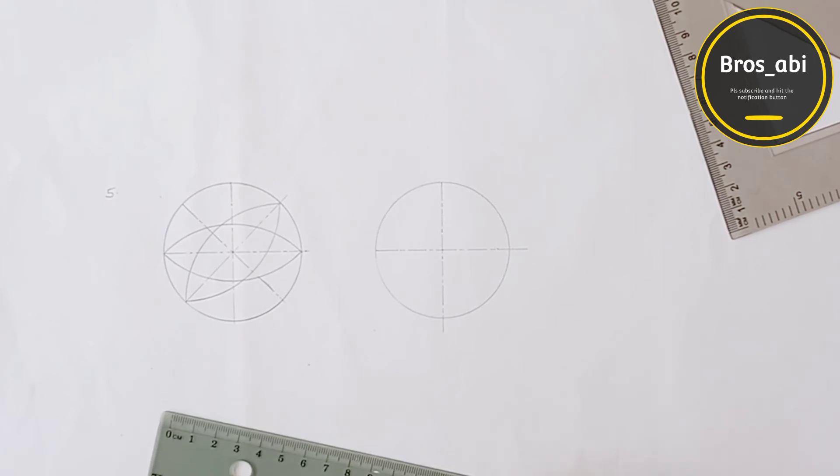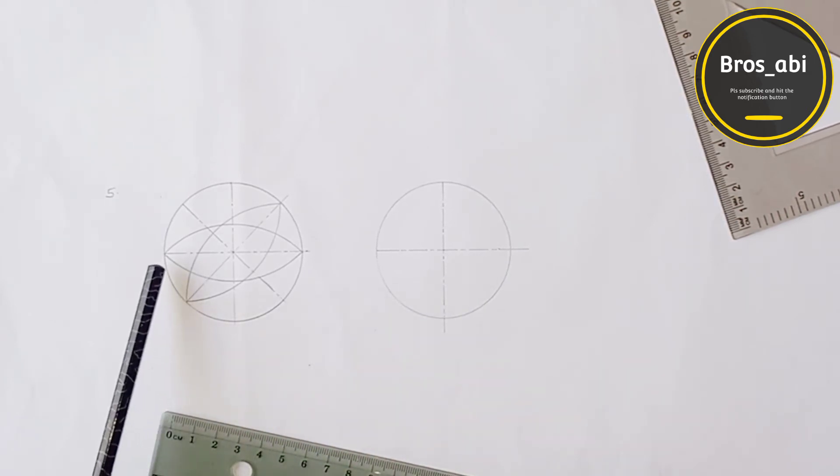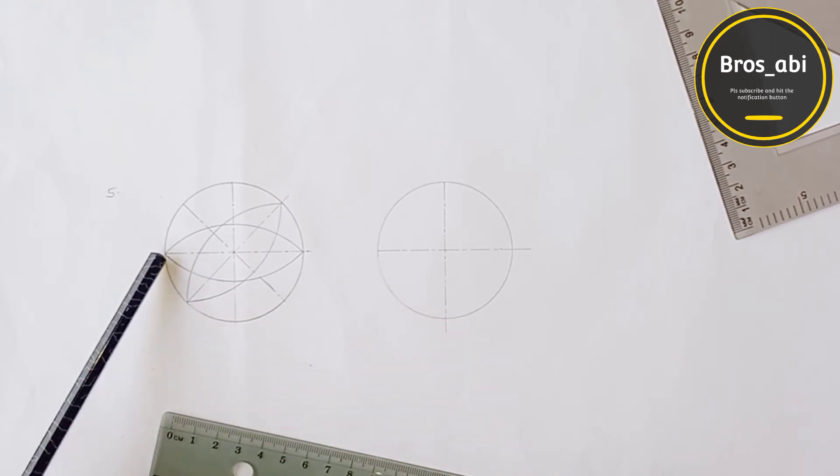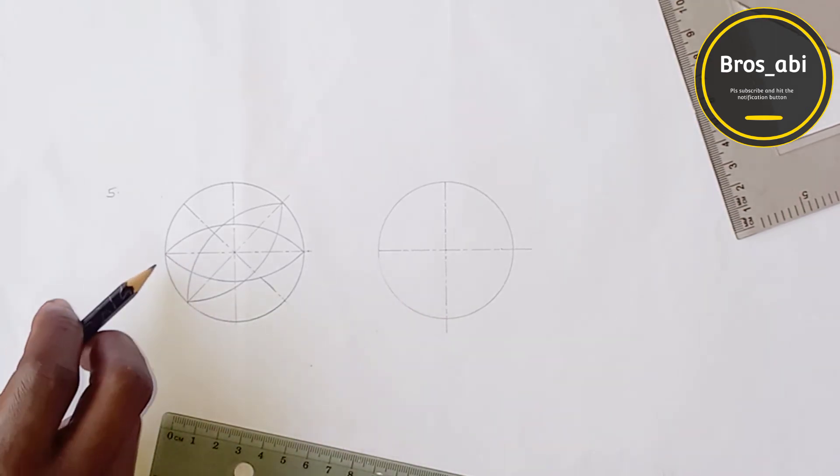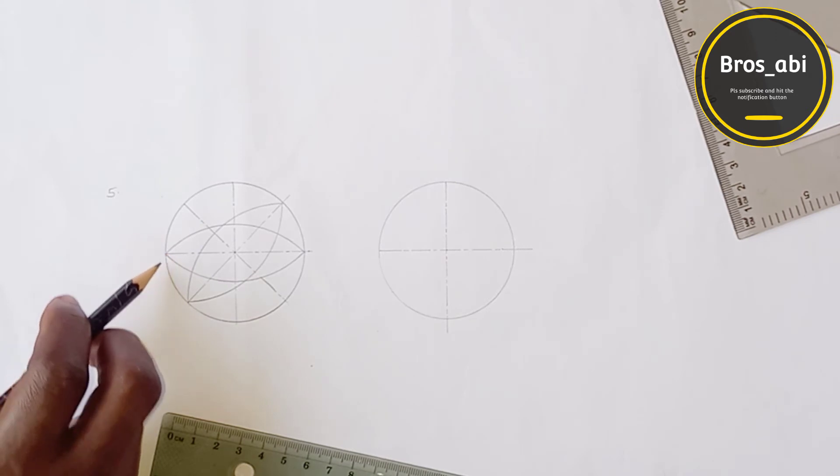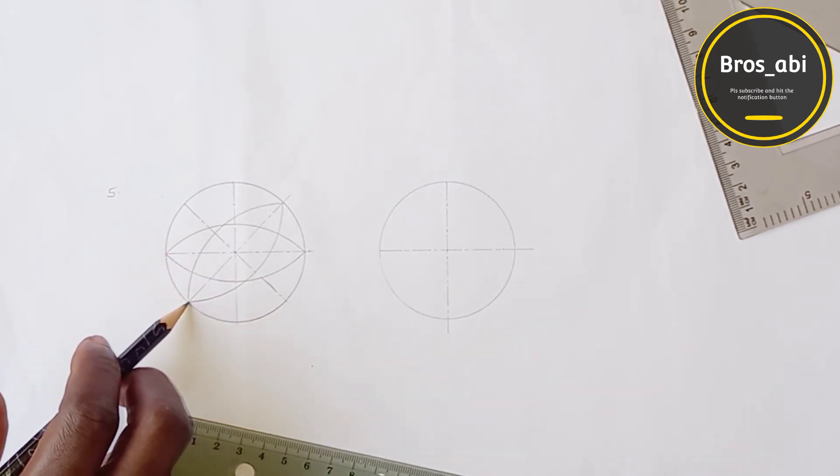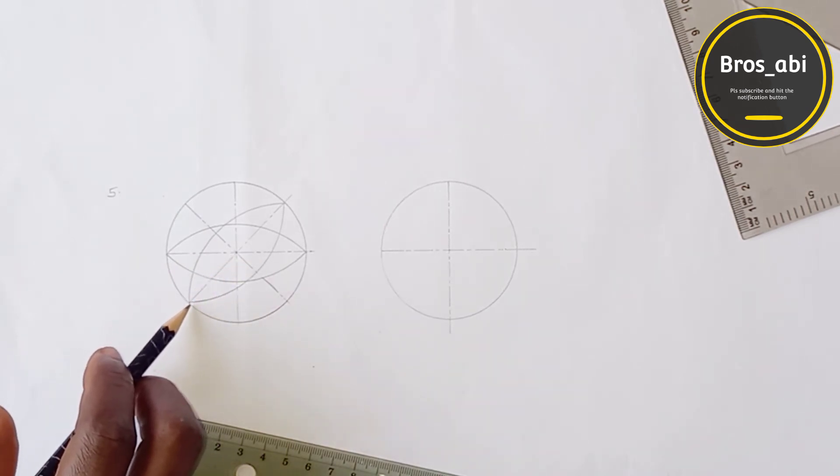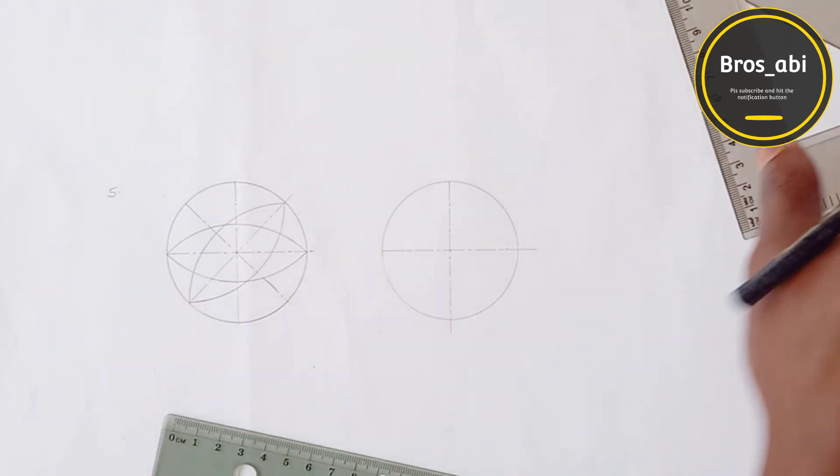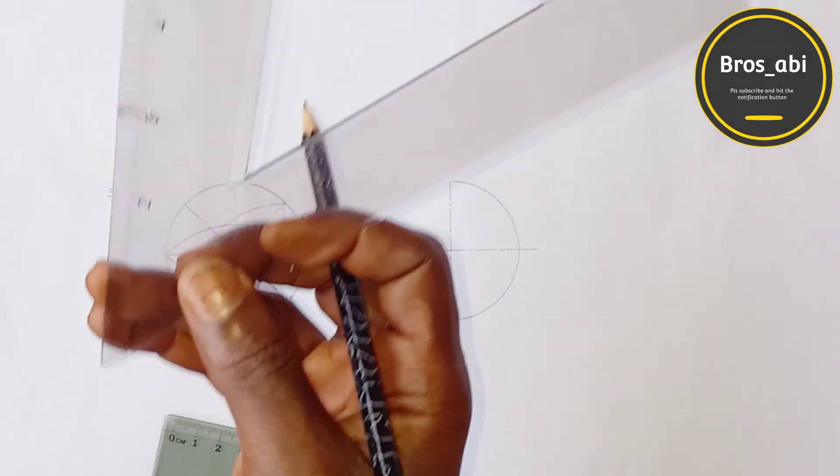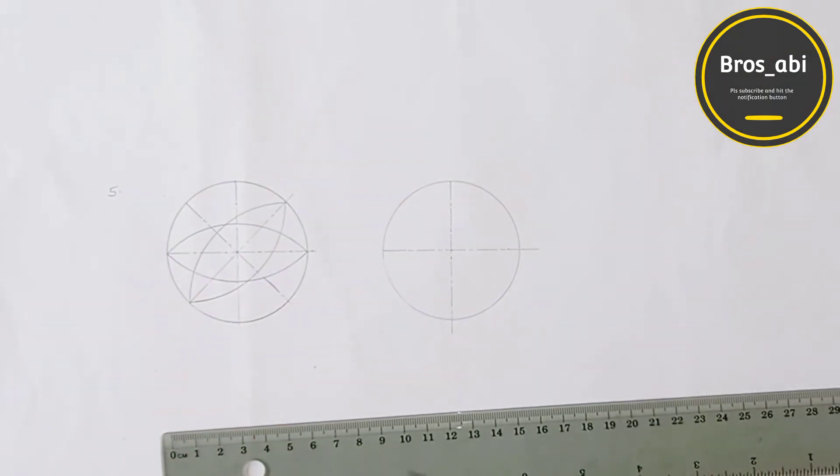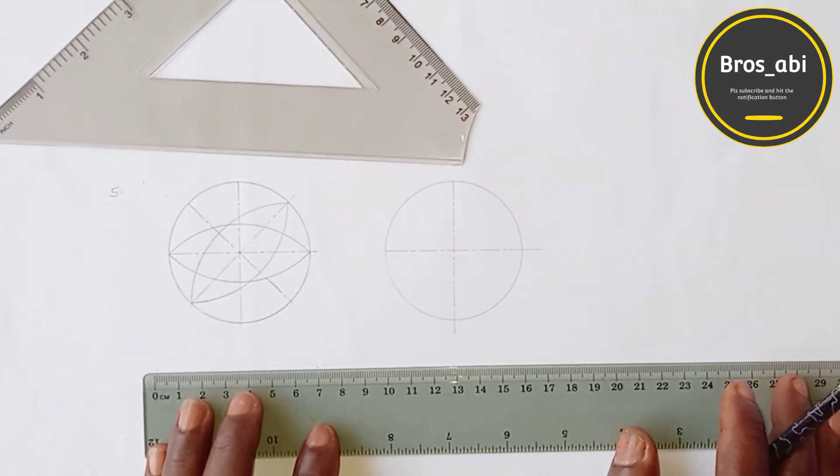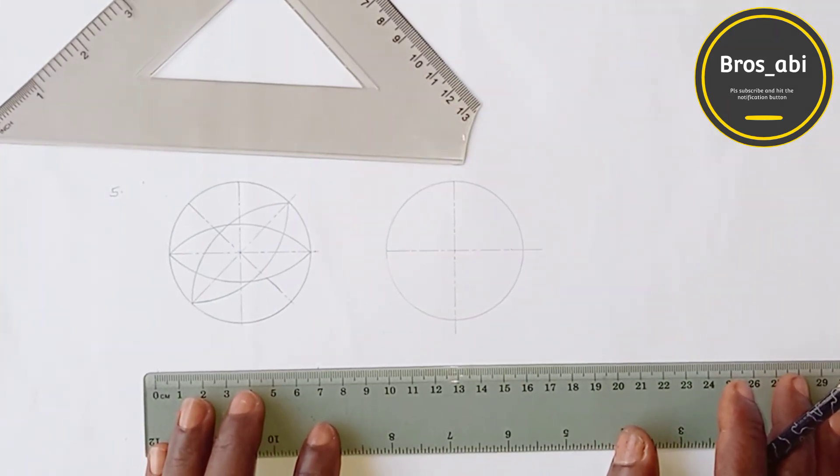What's next now is, from here, from this side, the center to this particular line is angle 45. You draw it with 45. 45 degrees set square, which is this. That is another center line. That will be 45 degrees to the circle.